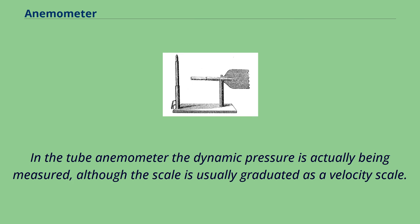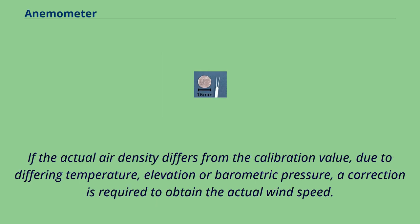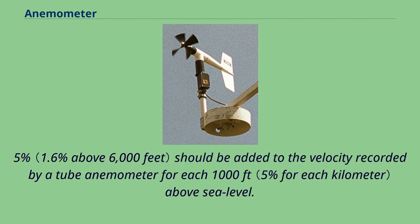In the tube anemometer the dynamic pressure is actually being measured, although the scale is usually graduated as a velocity scale. If the actual air density differs from the calibration value, due to differing temperature, elevation or barometric pressure, a correction is required to obtain the actual wind speed. Approximately 1.5% should be added to the velocity recorded by a tube anemometer for each 1000 feet above sea level.